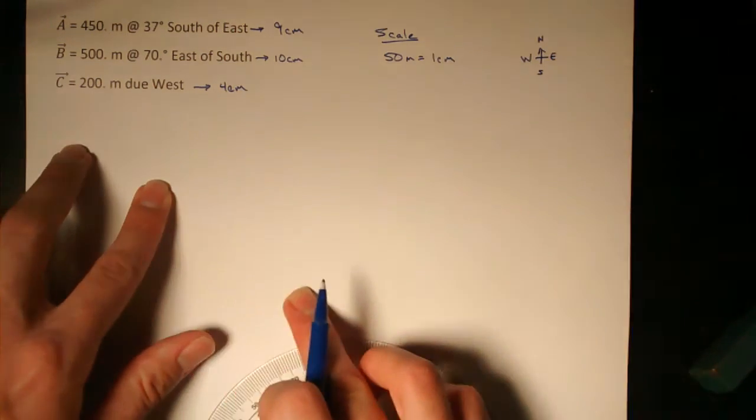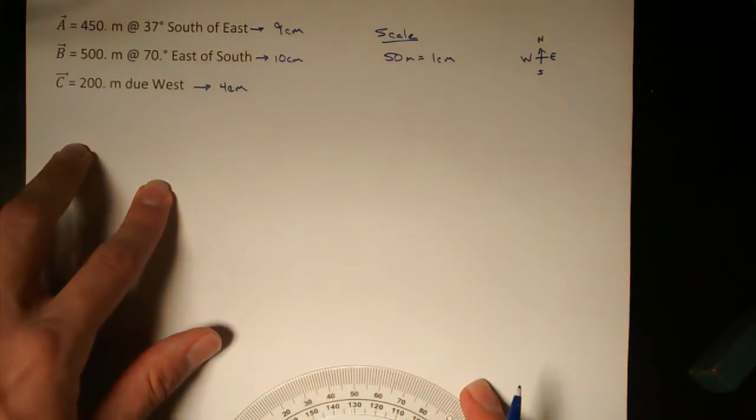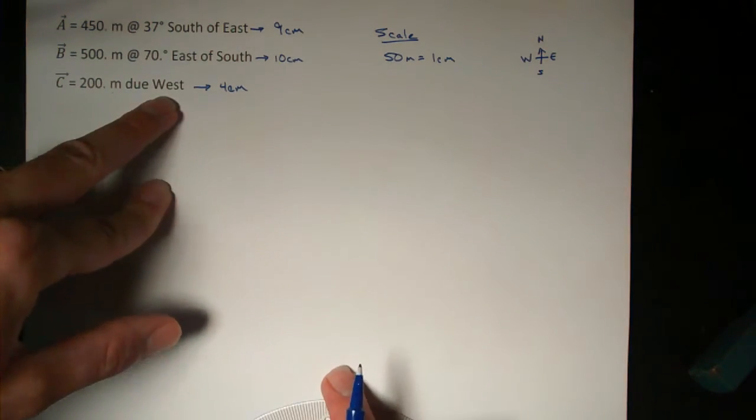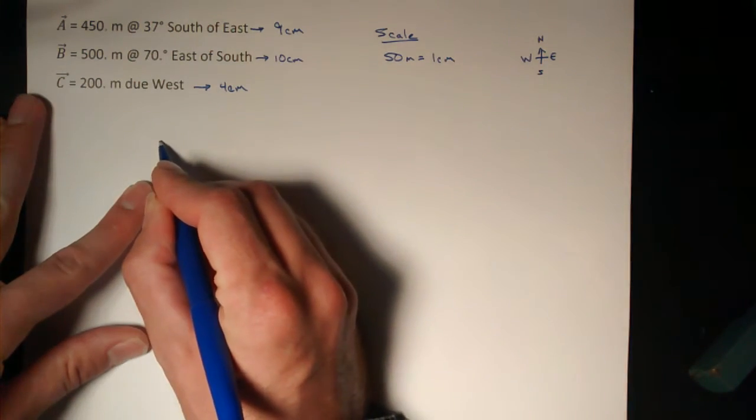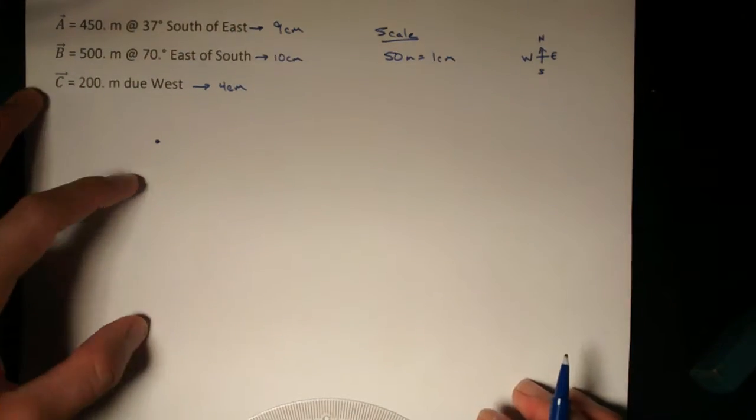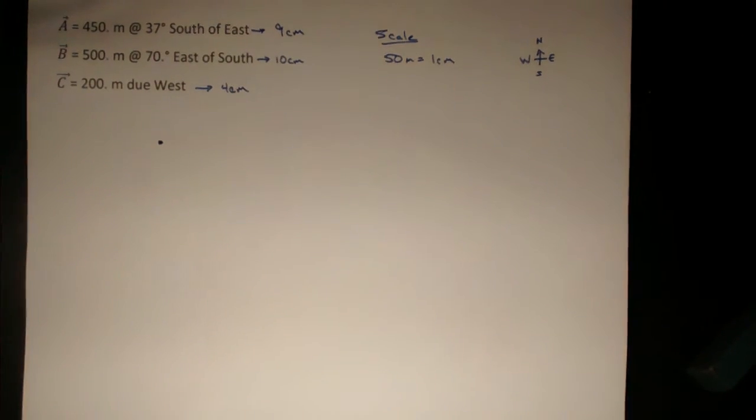then I'll be going down and to the right, and down and to the right, and then I'll be going to the west. So if I start in the upper left-hand corner of my paper somewhere, I should be able to keep these vectors on the page.